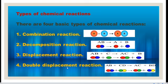Double displacement reaction means 2 substances will undergo the reaction and they interchange their ions. A+B reacts with C+D, and here B and C interchange their places. Two substances will interchange their places in solutions. That is known as a double displacement reaction.